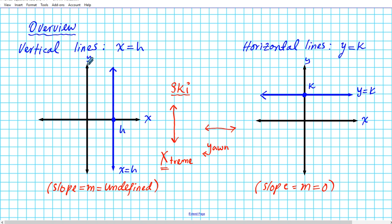Don't forget: x is the vertical line and y is the horizontal line. Another thing to keep in mind is that the equation of the y-axis is actually x equals zero, and the equation of the x-axis is y equals zero. The name of the axis and the equation of the line are two entirely different things. Even though the y-axis is oriented vertically, its equation is x equals zero; and even though the x-axis is horizontal, its equation is y equals zero.